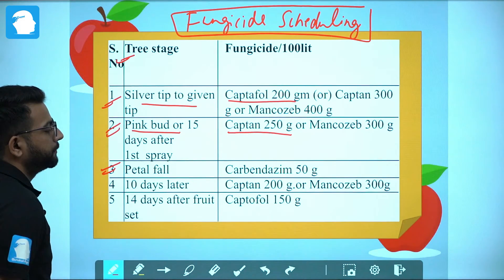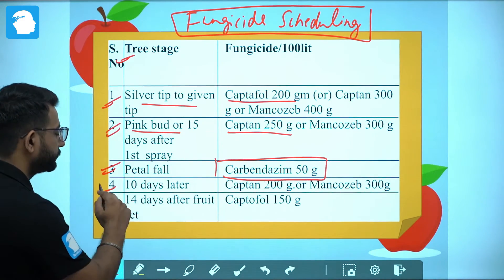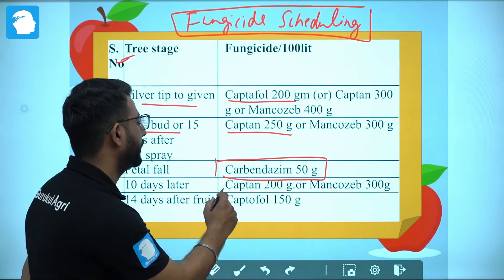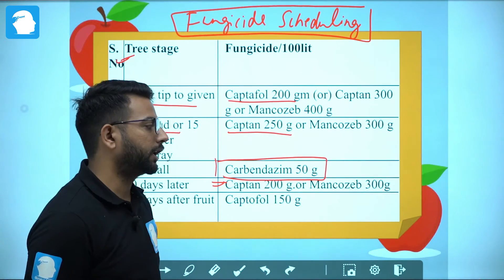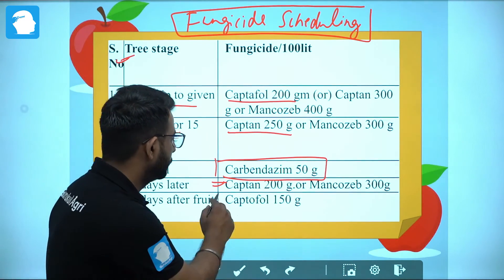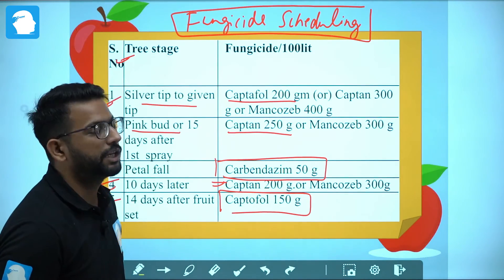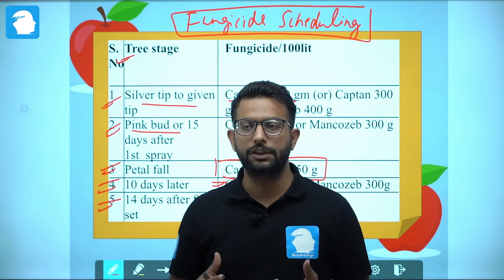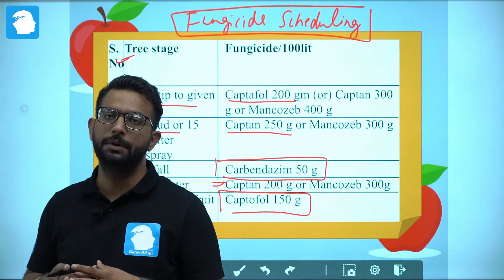The third spray is done at the petal fall stage using Carbendazim 50g. Ten days after petal fall, a fourth spray is done with Captan 200g or Mancozeb 300g. The last spray is done 14 days after fruit set using Captafol 150g. This completes the fungicide spray schedule for apple scab management.